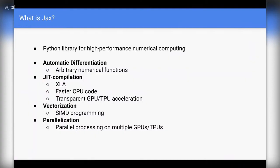Some of the core features that JAX provides are: automatic differentiation, JIT compilation, vectorization, and parallelization. We'll go through each of these one by one. I may not be able to cover parallelization today, but we'll at least see the first three in the list.